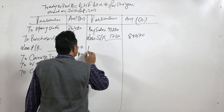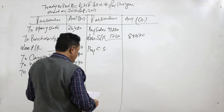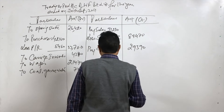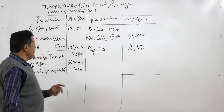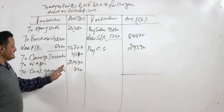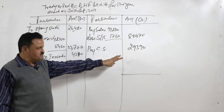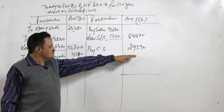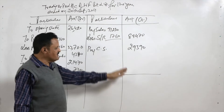The next credit item is the closing stock, which is 29,390 rupees. This means the output of our direct expenses is: we sold goods worth 89,470 rupees in the market, and the balance of 29,390 rupees remains with us in the warehouse as closing stock.